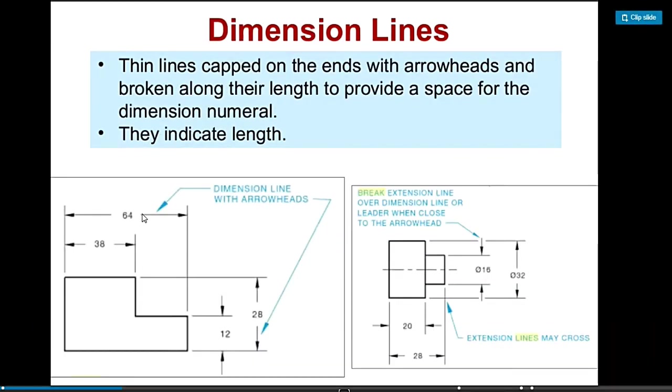Dimension lines also use thin lead or mechanical pen or technical pen, thin at 0.2 or 0.3 millimeters. The arrowheads need to be perfect in making the left and right arrowheads.